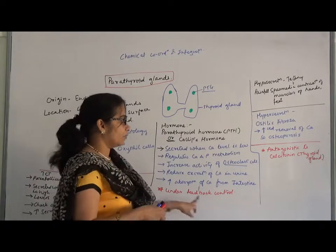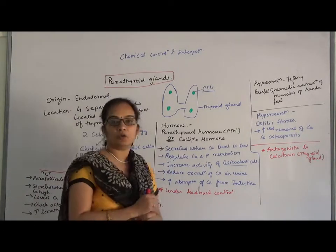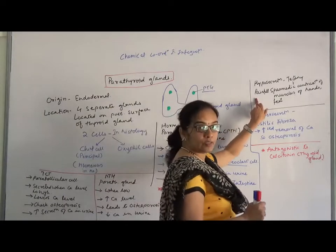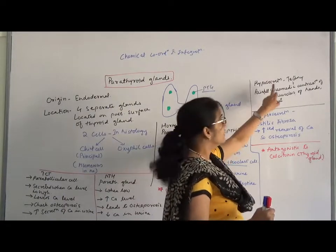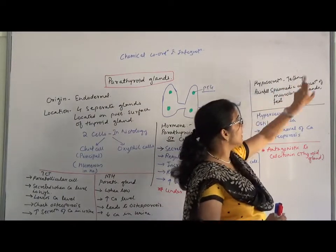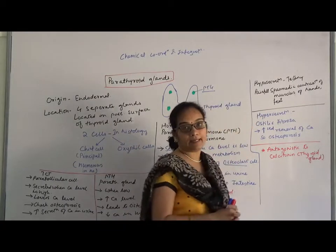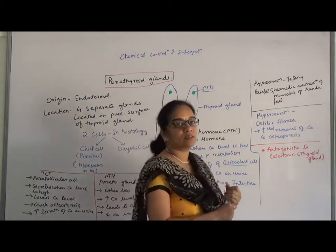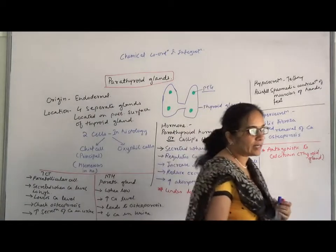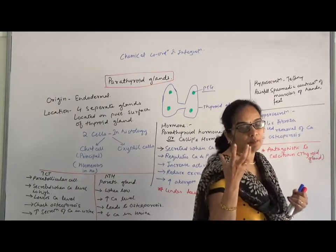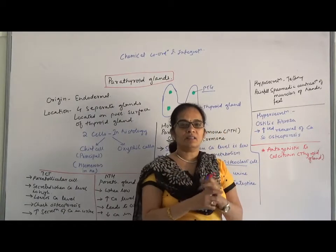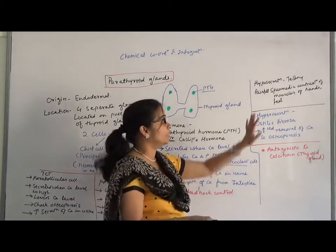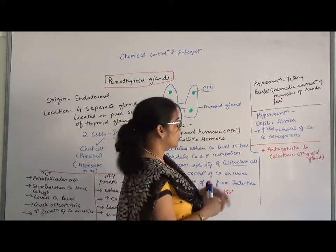This particular hormone is under the control of a feedback mechanism. When this hormone is hypo-secreted, the condition that arises is tetany. Tetany is a painful spasmodic contraction of the muscles of the hands and feet — the muscles contract and that situation is very painful. You can see the picture of tetany in your textbook.